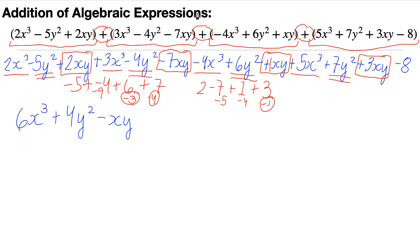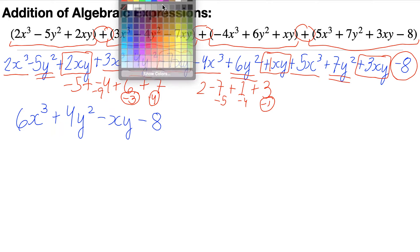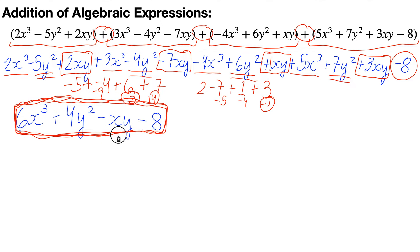Lastly, we need to consider the constants. We have only one constant in this example: minus 8. Since there are no other constants in the other terms, we just bring down minus 8. And pretty much this is our answer for the addition of algebraic expressions, also adhering to the laws of removing the groupings from the previous video. So our final answer is 6x cubed plus 4y squared minus xy minus 8.